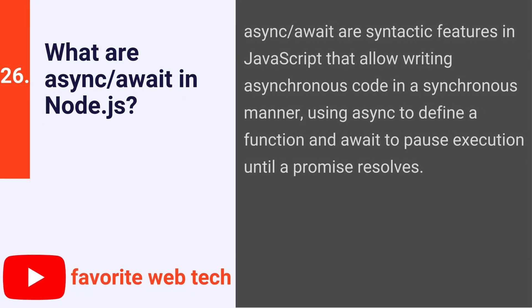What are async/await in Node.js? Async/await are syntactic features in JavaScript that allow writing asynchronous code in a synchronous manner, using async to define a function and await to pause execution until a promise resolves.